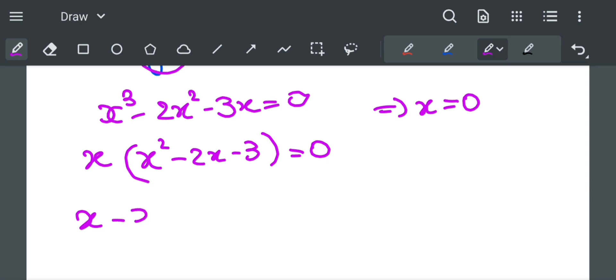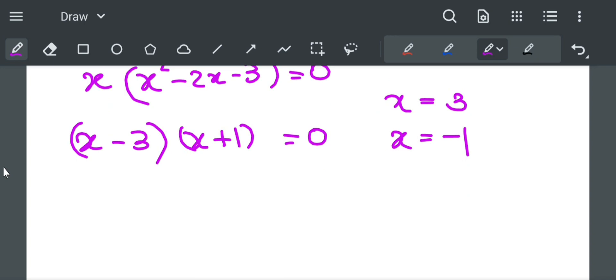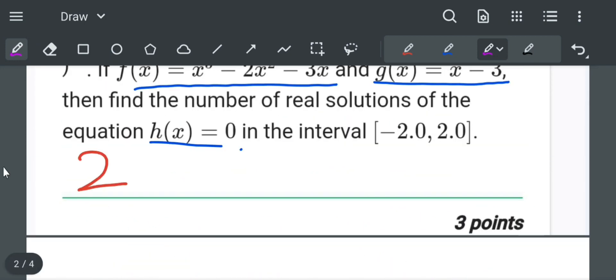x equal to 3 and x equal to minus 1. So we get three values of x which are minus 1, 0, and 3. But they have also mentioned a condition that x should lie in the interval from minus 2 to plus 2.